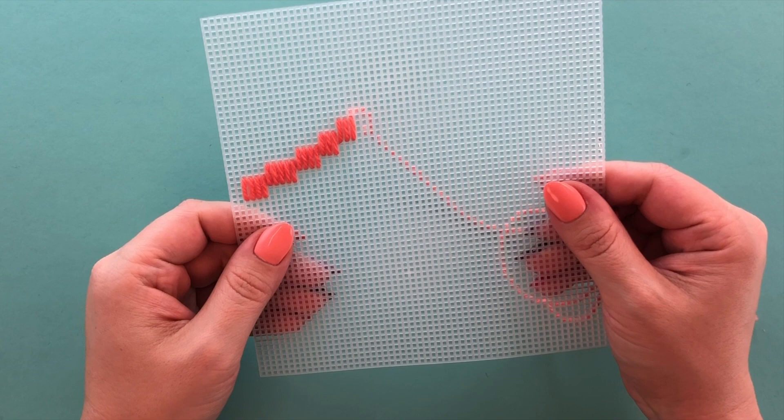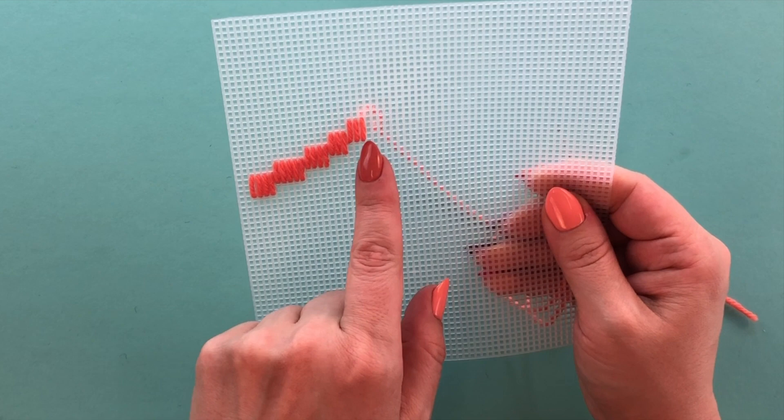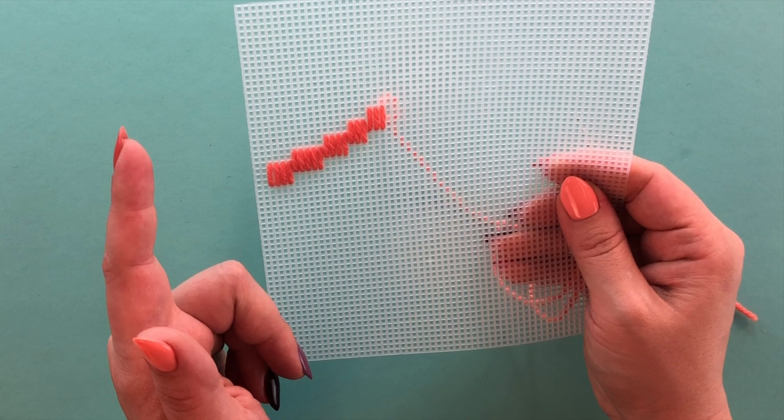In this video we'll learn how to do the basic Bargello stitch. The Bargello stitch itself is super easy - it's just a simple vertical up and down stitch that comes up from the bottom of the stitch and down at the top or vice versa.